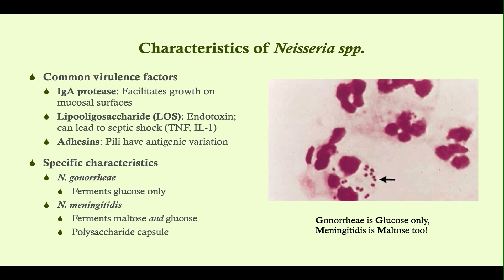Some distinguishing characteristics: Neisseria gonorrhea ferments glucose only, whereas Neisseria meningitidis ferments both maltose and glucose. A useful mnemonic — gonorrhea starts with G for glucose only, while meningitidis starts with M and can ferment maltose too. Also, Neisseria meningitidis has a polysaccharide capsule, whereas Neisseria gonorrhea is not encapsulated — that polysaccharide capsule will be very important when we talk about vaccination.